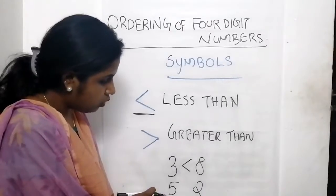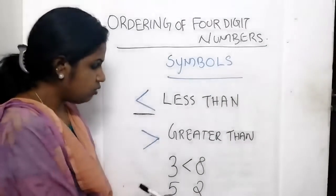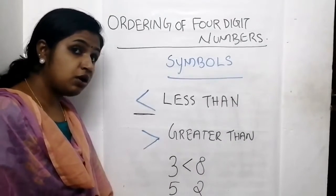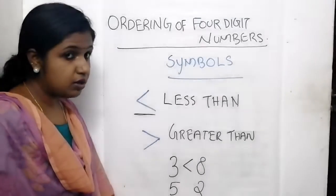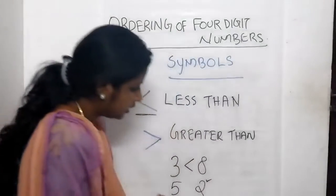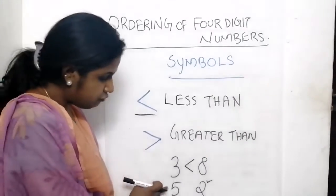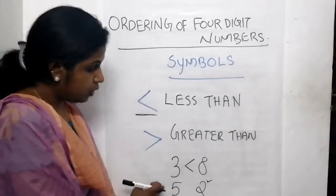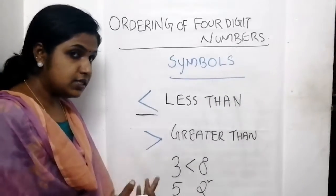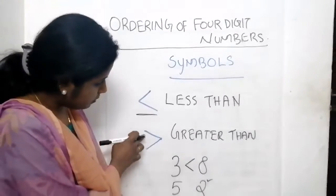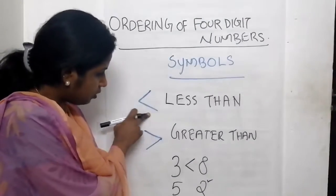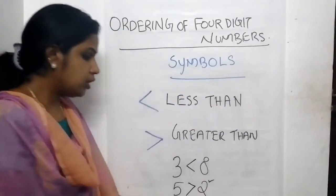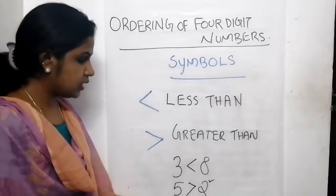Next pair - the numbers are 5 and 2. In between 5 and 2, which number is smaller? We know 2 is smaller than 5. Or we can say 5 is greater than 2. What is the symbol of greater than? We know the symbol of greater than. So 5 is greater than 2.